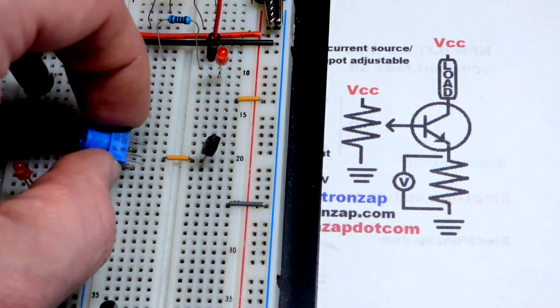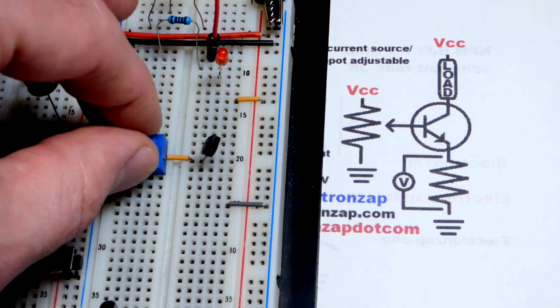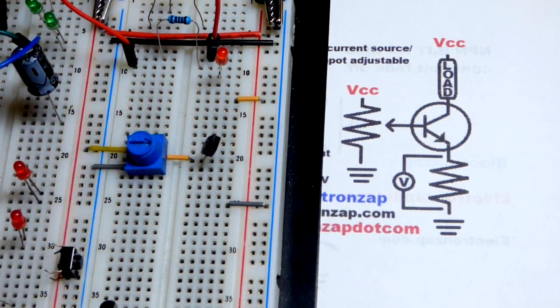The two end pins go, one to the positive supply, one to the negative supply. So we got it about halfway right now.